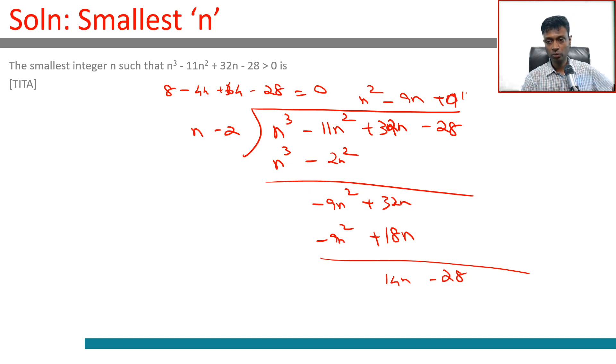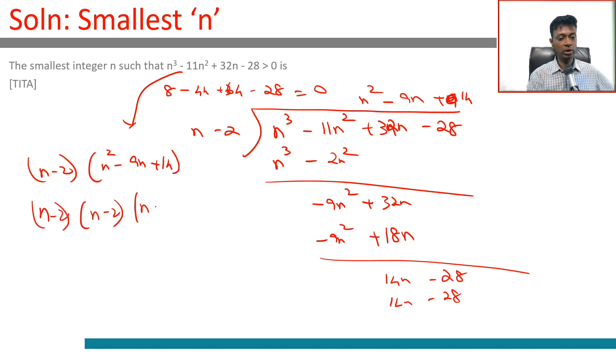Sorry, plus 14. This is 14n - 28. Our expression is (n - 2)(n² - 9n + 14), or it is (n - 2)(n - 2)(n - 7). When will this be greater than 0?